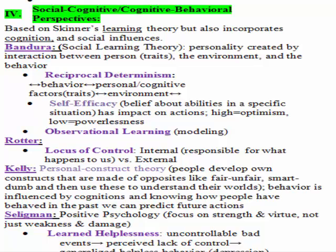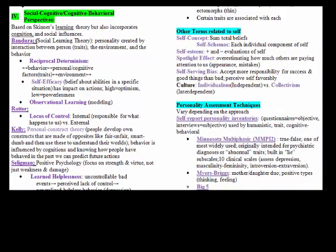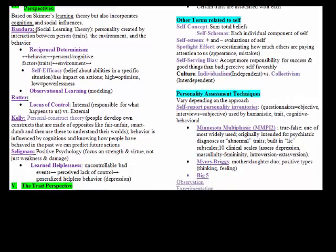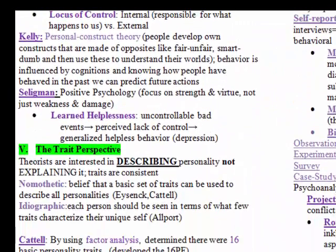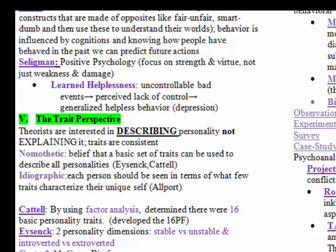Knowing how people have behaved in the past allows us to predict future actions. Martin Seligman is a big name in psychology right now, well known for positive psychology. He said we've focused too much on the negatives in understanding others and need to focus on positives like strength and virtue. His contribution to personality theory here is through learned helplessness — when people have failed in different situations over and over again, it teaches them to not even try.